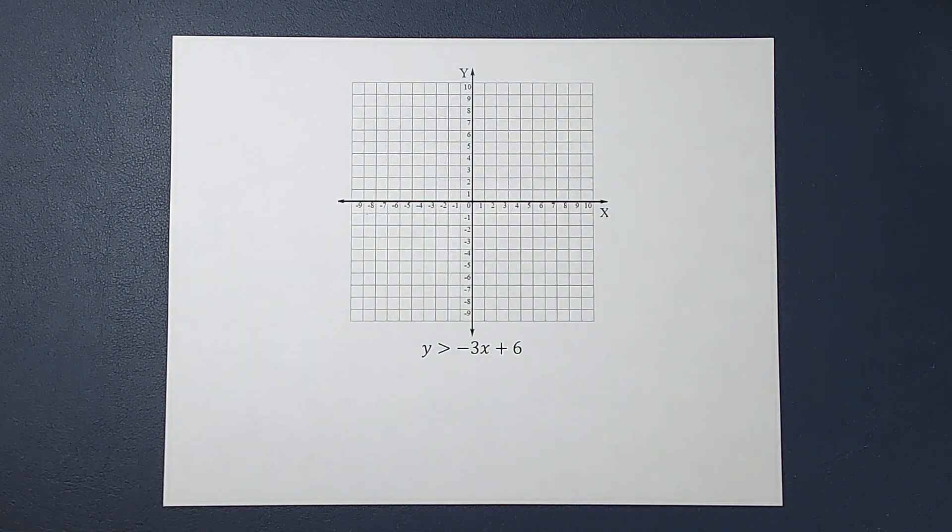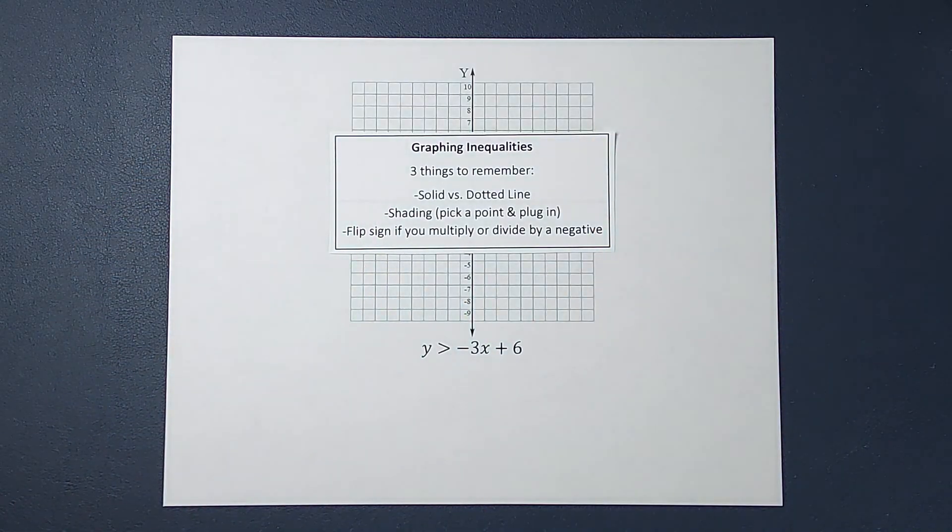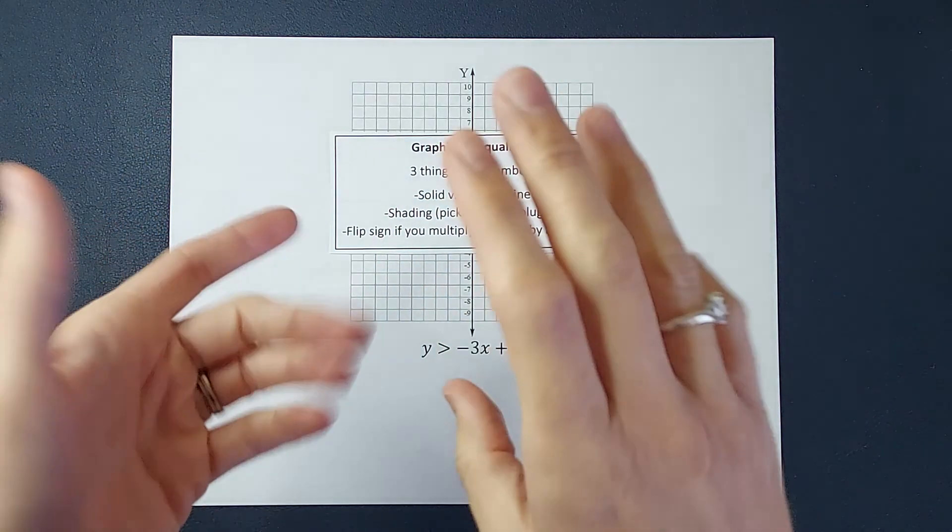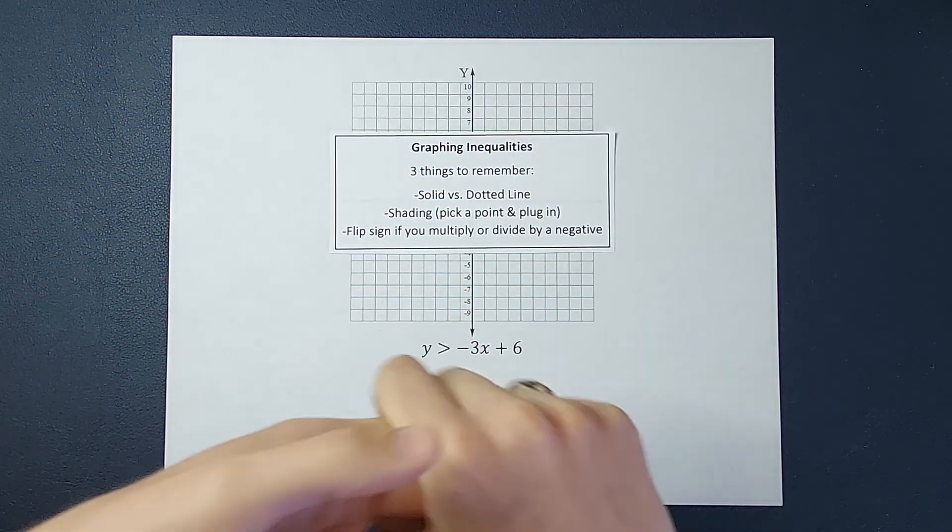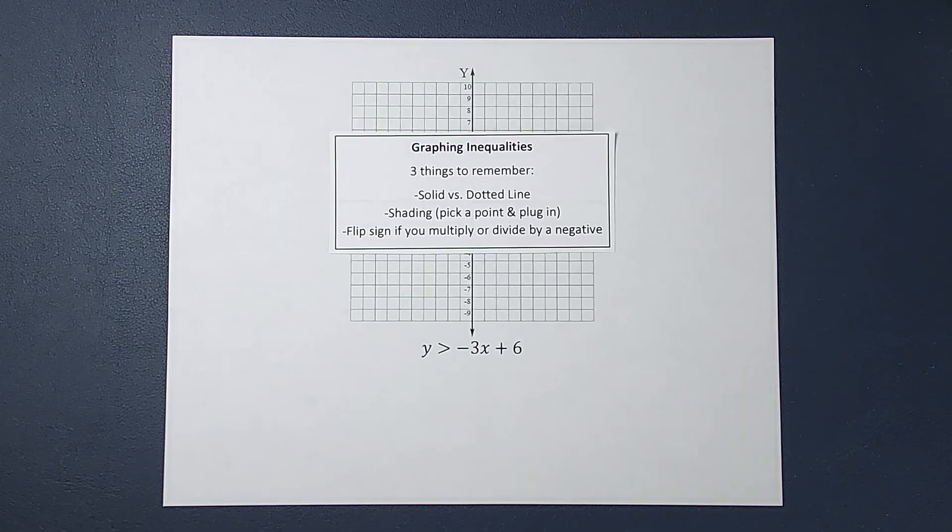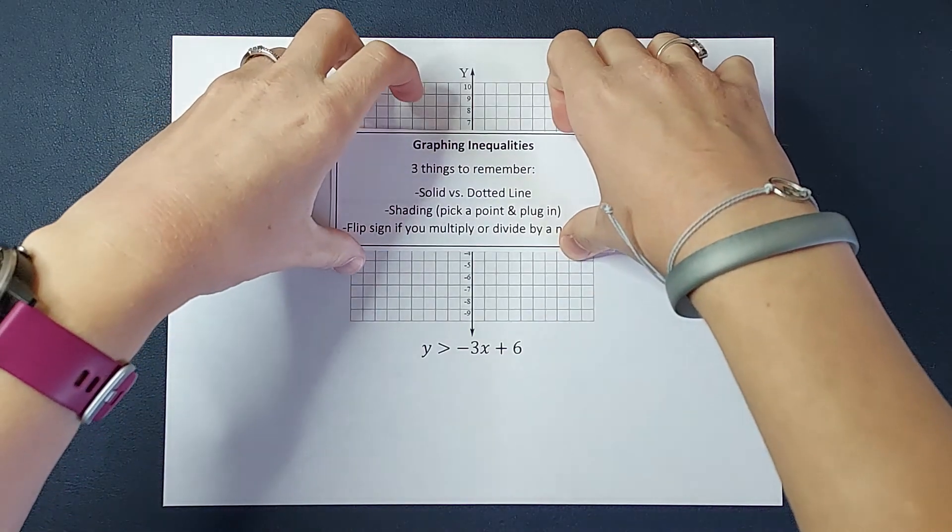There are three things we need to remember when we're graphing inequalities versus graphing lines. We need to remember to notice if it's going to be a solid or dotted line, we will be shading, and we flip the sign if we multiply or divide by a negative. If this feels like I'm throwing a lot at you at the moment, don't worry, we're going to break it down.